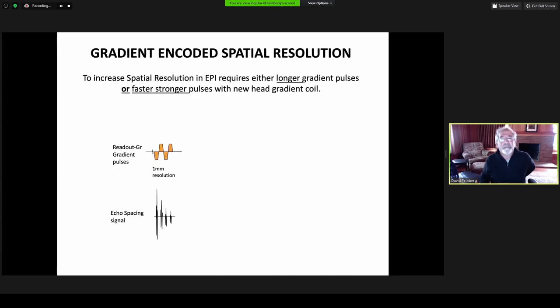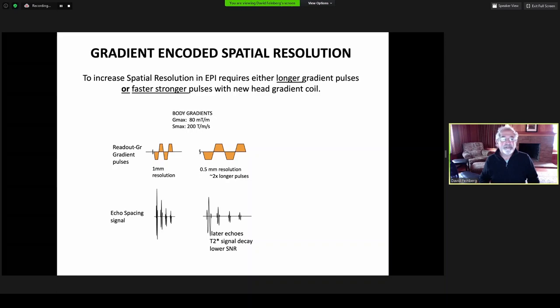Gradient encoding is a very critical part of this higher resolution. I'll show you a basic echo planar readout sequence where the brown boxes are the time integral of the pulses, and the area of those boxes or pulses is proportional to the resolution. To go to higher resolution, 0.5 millimeter, we need to double the length of the pulse using the maximum gradient already with standard body gradients. The higher resolution lengthens the echo time, leading to more T2-star decay and lower signal-to-noise in the image.